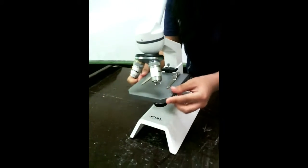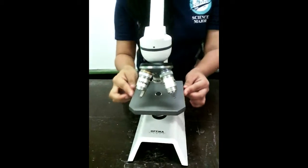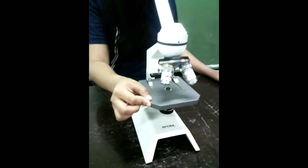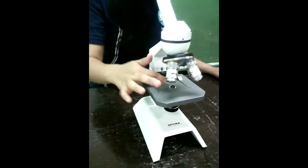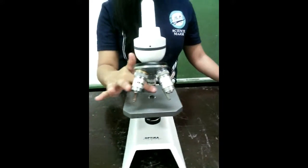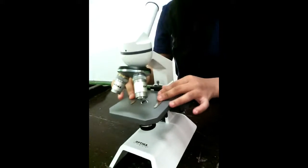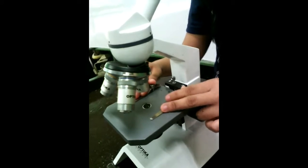The stage is the platform that holds or supports the slide containing the specimen. It has an opening at the center that allows light to pass from below into the specimen for the study. The stage clips hold the specimen firmly on the stage.